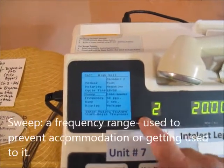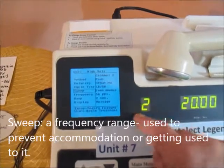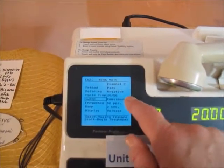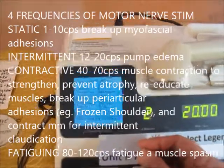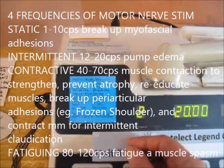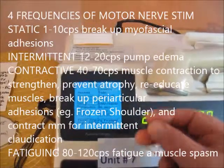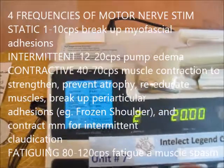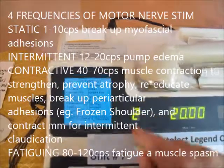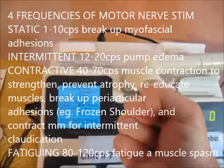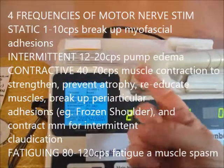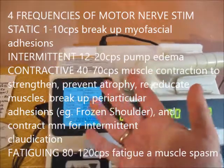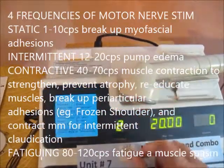Sweep allows us to go through a frequency range. Frequency ranges are beneficial because if you always stimulate at one single frequency, the body gets used to it. To prevent accommodation, we use a sweep covering the full available range. For myofascial adhesions using static frequency, we use 1 to 10 cycles per second. For a pumping effect to reduce edema — intermittent motor nerve stim — we set it from 12 to 20 cycles per second. For contractive to strengthen muscles, prevent atrophy, do muscle re-education, break periarticular adhesions like frozen shoulder, or pump the legs for intermittent claudication, we use 40 to 70 cycles per second.